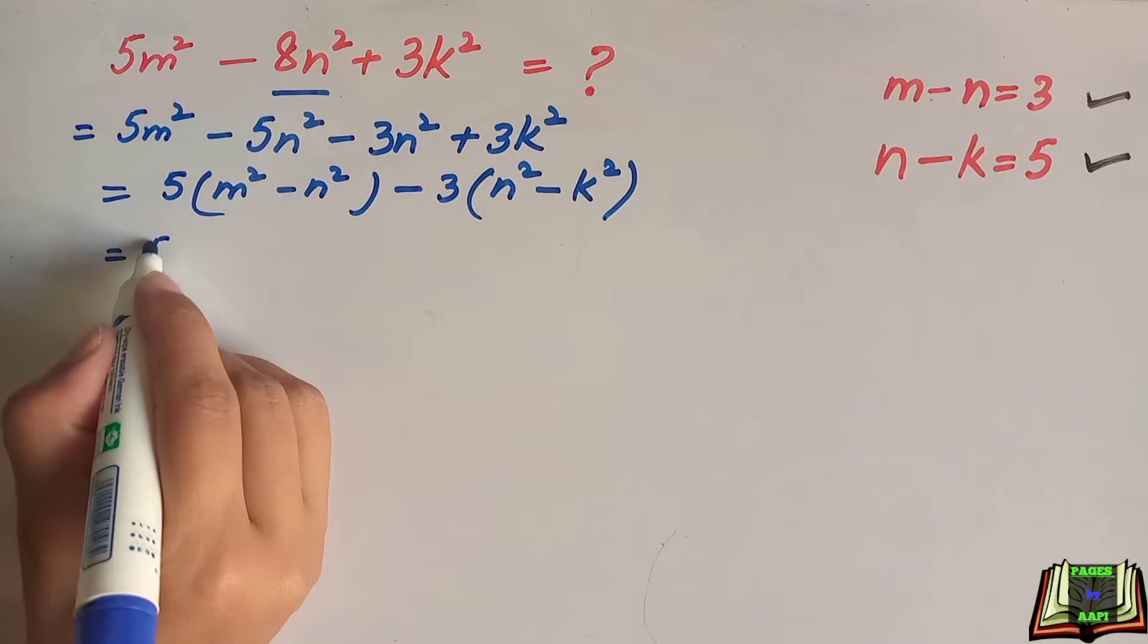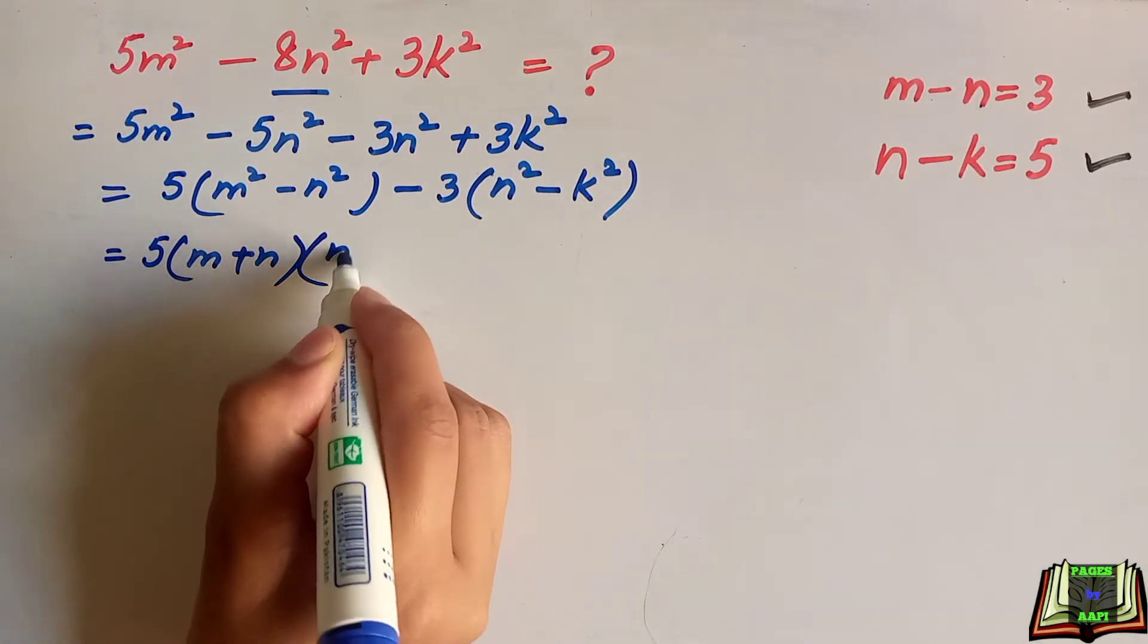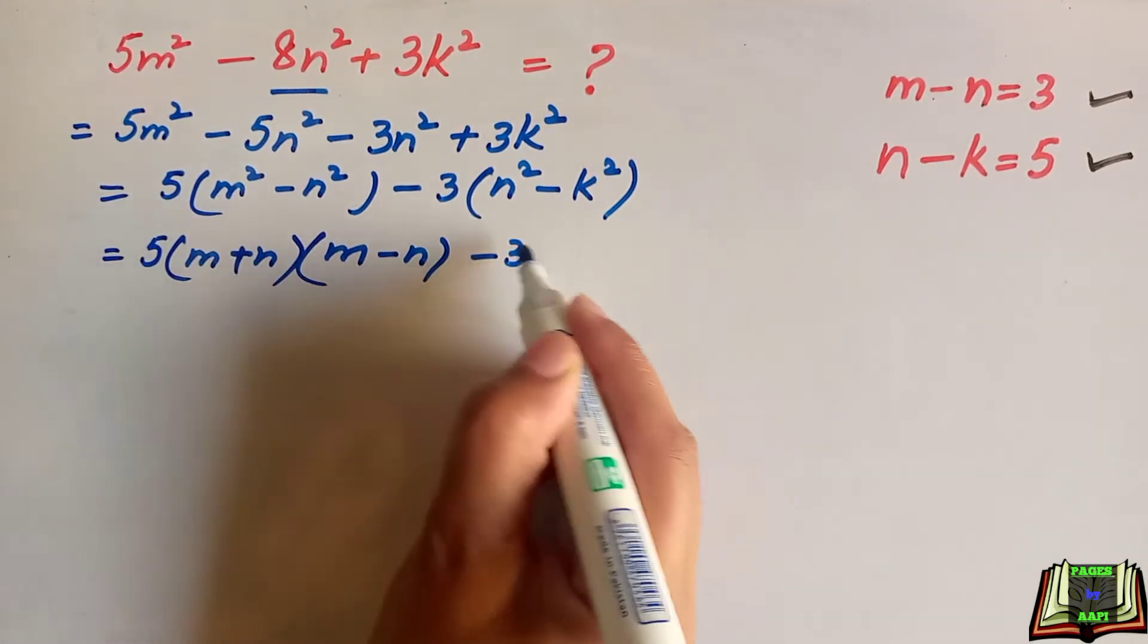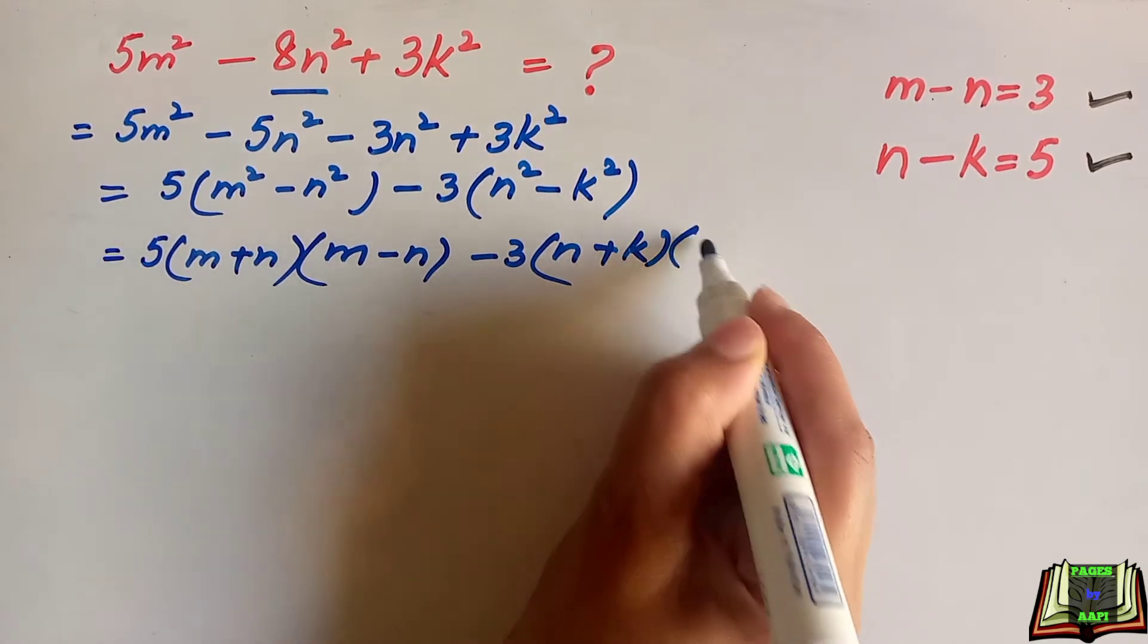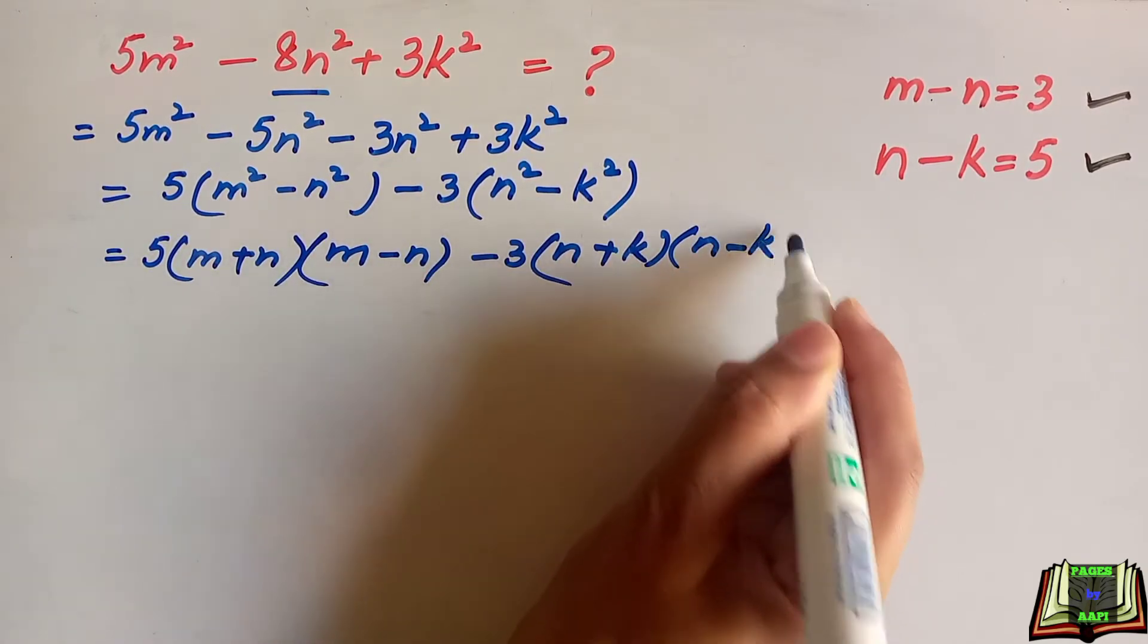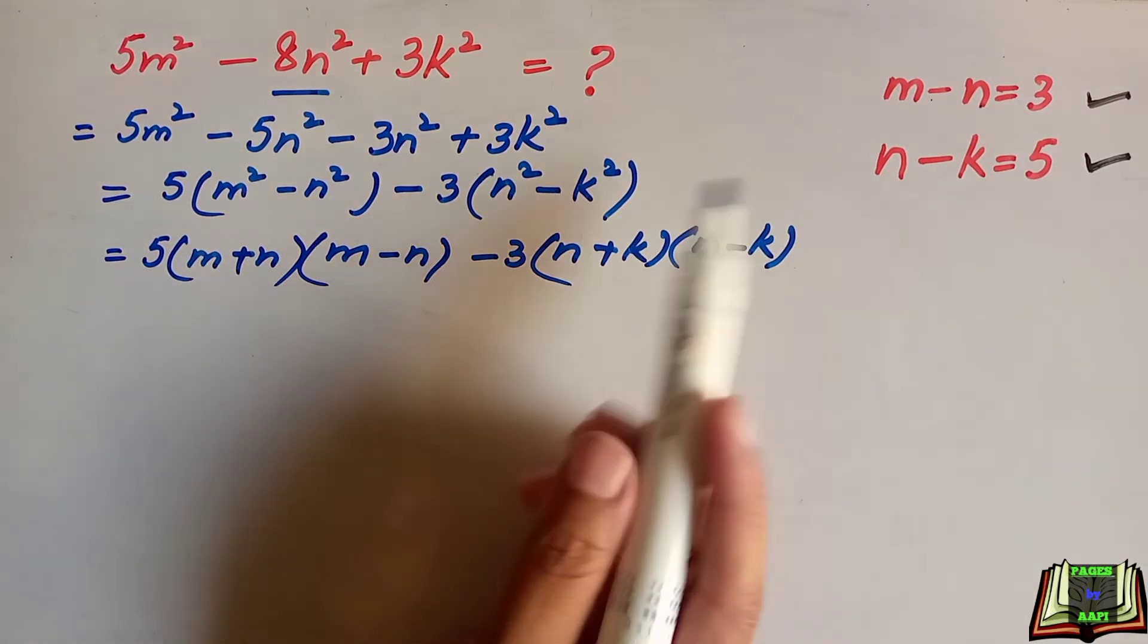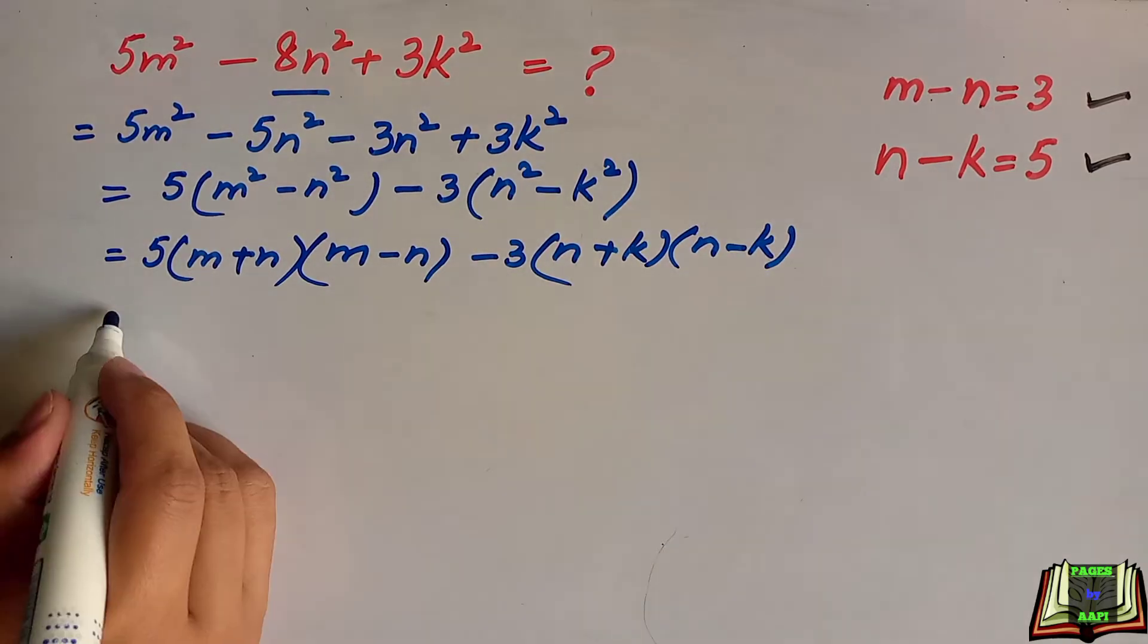Here we will use the third binomial formula: 5(m + n)(m - n) - 3(n + k)(n - k). This is the same as a² - b² = (a + b)(a - b). Now we are going to substitute these values: m - n = 3 and n - k = 5.